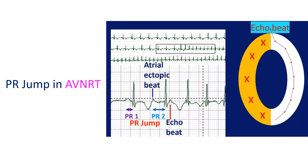Usual accessory pathways do not have decremental properties. Typical slow-fast atrioventricular nodal reentrant tachycardia, initiated by an atrial ectopic beat, has a sudden PR jump as the ectopic beat travels down the slow pathway. PJRT is also initiated by a critical shortening of atrial cycle length, but without the PR jump which is characteristic of typical slow-fast AVNRT.